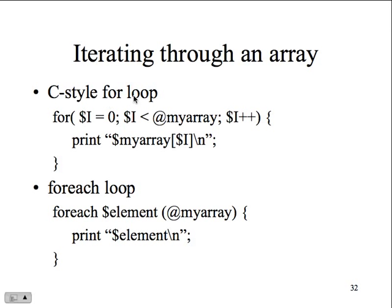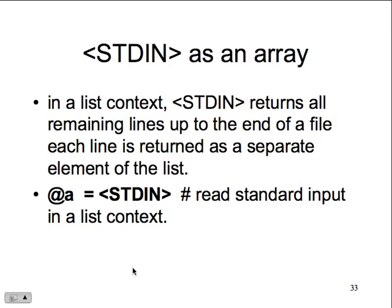Iterating through an array: C-style for loop - 'for ($i = 0; $i < scalar(@array); $i++)' - go through using i as a value. Or you can use 'foreach' which is different - more Pascal-like. For each element in the array, print something out. In a list context, standard input returns all remaining lines up to end of file, with each line as a separate element in the list. '@a = <STDIN>' reads standard input into the list context, reading multiple lines until a blank line.